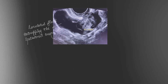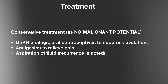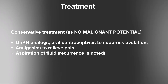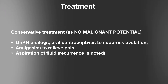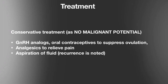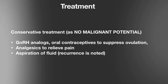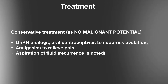Coming to treatment options: these cysts are benign with no malignant potential, so we go with conservative treatments. We can give the patient GnRH analogues or oral contraceptive pills to suppress ovulation and reduce oozing of ovarian fluid. Second, we can give analgesics to relieve pelvic pain. Third is cyst fluid aspiration, though aspiration can lead to recurrence, so it is not a definitive treatment.